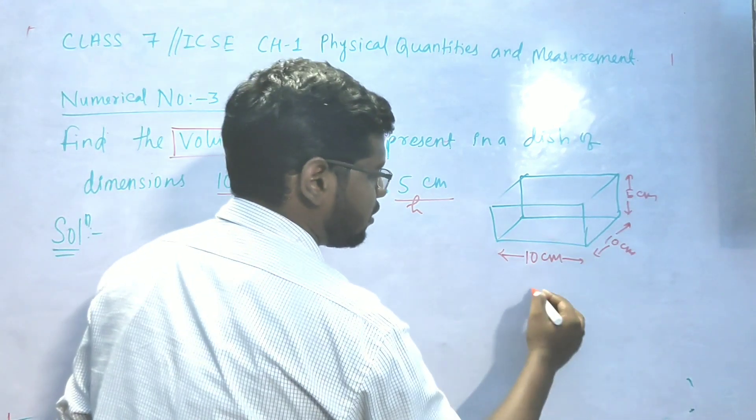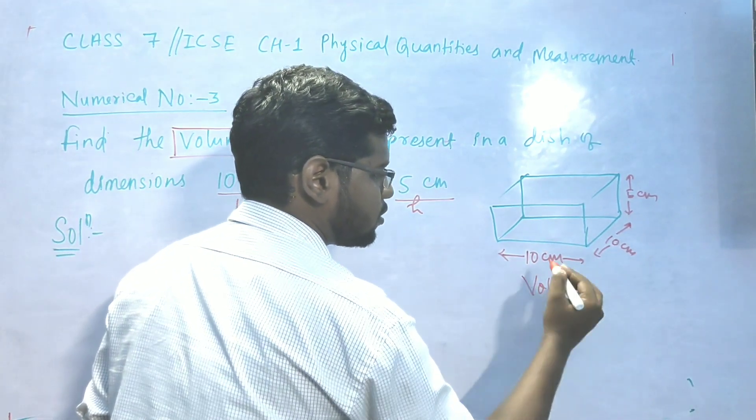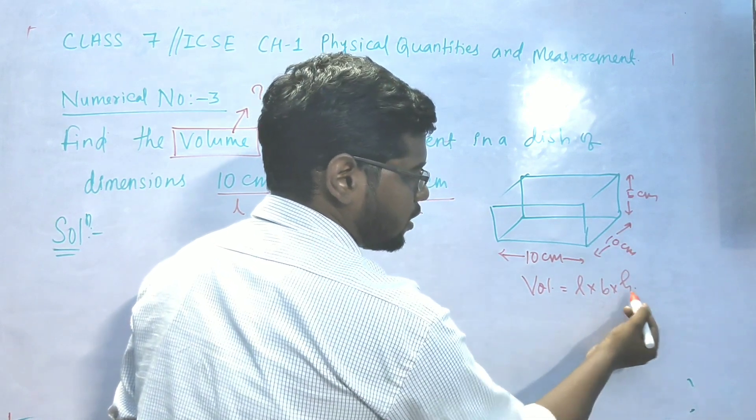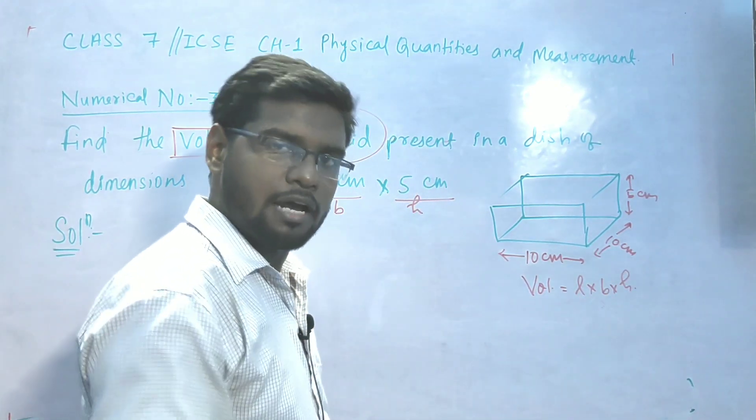And we know that the keyword volume formula is L into B into H. So L, B, H, we have values to put and answer to get.